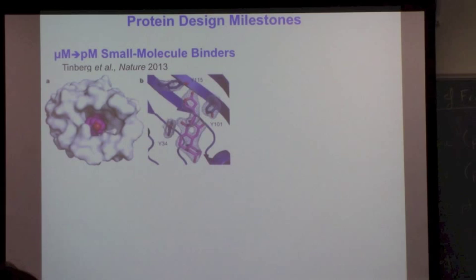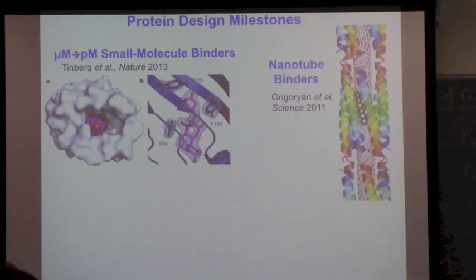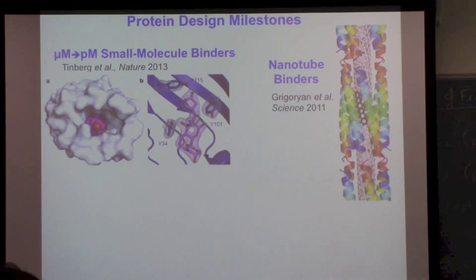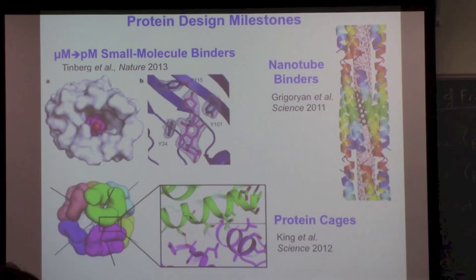A common strategy today is to get a starter out of the computer and then use evolution to evolve something stronger. From that, they were able to get picomolar binders through experimental selection techniques. Nanotube binders - this is Gevorg Grigoryan working in Bill DeGrado's lab. Gevorg looked at the geometry of the nanotube, put helices around the side, calculated the different ways helices could pack around it and then designed side chains to pack.